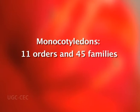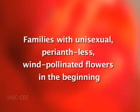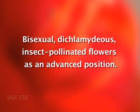Monocotyledons have been classified into 11 orders and 45 families, whereas dicotyledons are classified into 44 orders and 261 families. In both monocotyledons and dicotyledons, families with unisexual, perianth-less, wind-pollinated flowers were placed in the beginning, and those with bisexual, dichlamydeous, insect-pollinated flowers were placed in an advanced position.